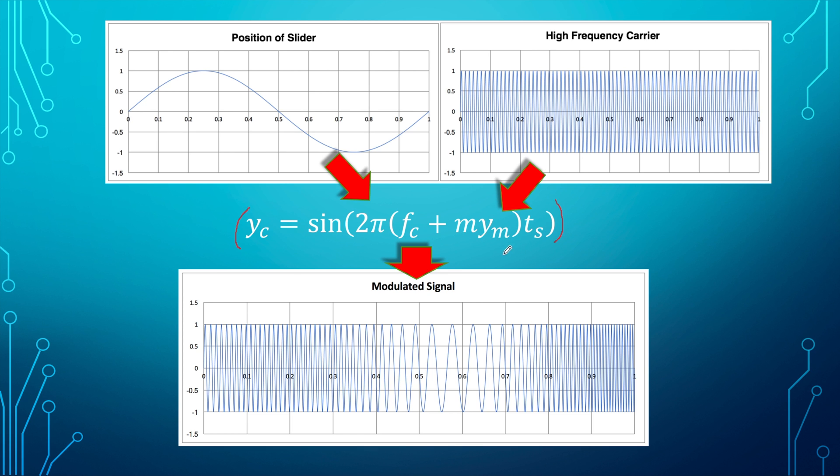So it works like this. Here we have the function that was represented by this graph. This is the frequency of our carrier. Now you'll notice that by adding whatever value from this function up here to our frequency of our carrier, it will have the following effect. Let me explain.